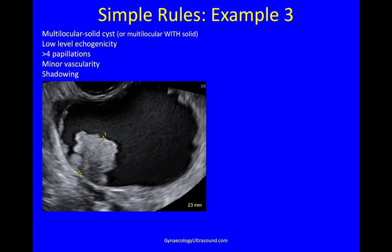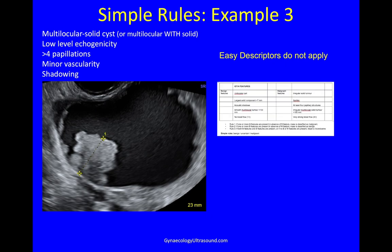Another example of simple rules: a multilocular solid cyst with two locules, low-level echogenicity, and a papillation — solid material more than 3 mm in height, indenting the cyst wall, 23 mm, with fluid on three sides. But there were more than four papillations overall, with minor vascularity and some shadowing. Easy descriptors don't apply. On simple rules, there is shadowing — a benign feature — but also at least four papillations, a malignant feature. So it has both benign and malignant features: uncertain on simple rules. We'll revisit this mass.